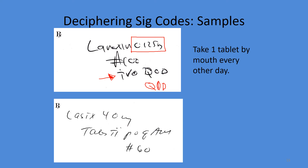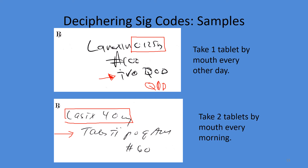Next prescription — drug: Lasix, strength 40 mg. Sig: tabs 2, PO, QAM. Even though tablets are listed first, we go in order: take two tablets by mouth every morning.